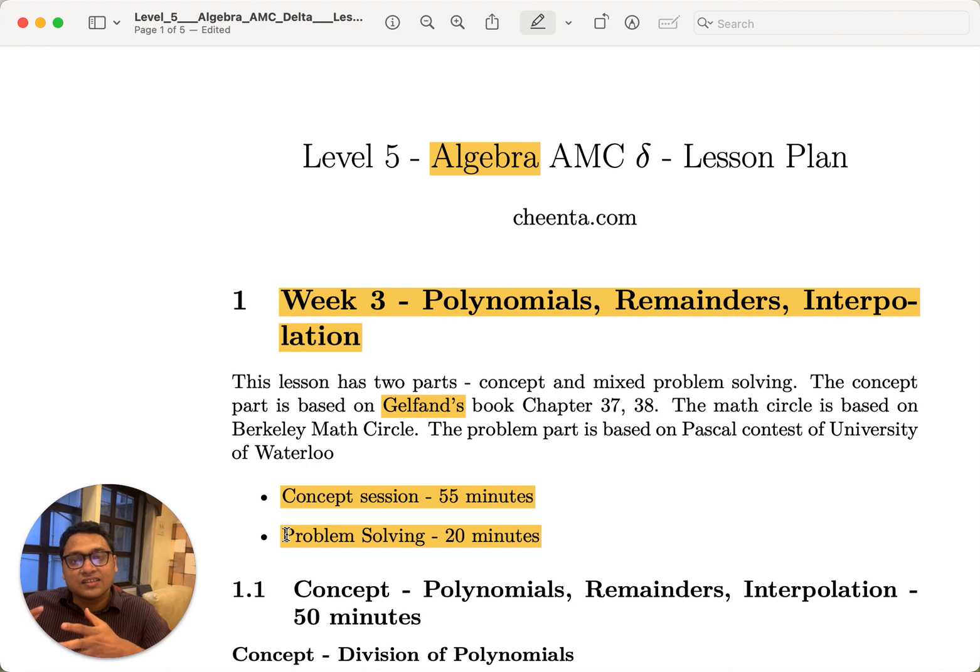Each of the lesson plans at Chitta is usually based on some foundational book. In this particular case, this is from level 5. Level 5 is for AMC 8 and IOQM preparation. It's one of the first algebra modules and it's based on Gelfand's famous book on algebra. Gelfand was a very established mathematician from the last century and he also wrote for kids.